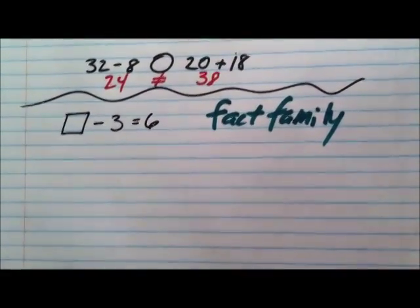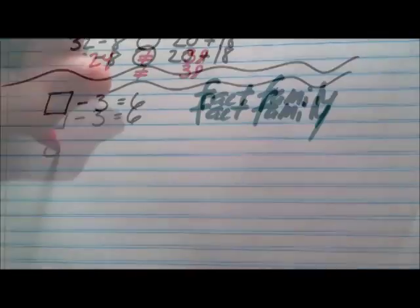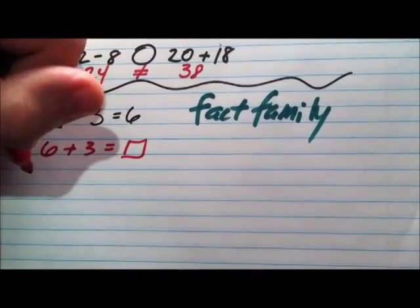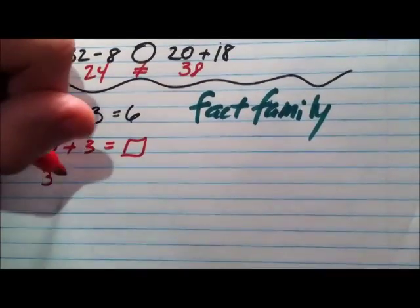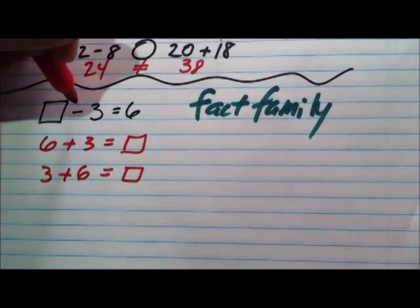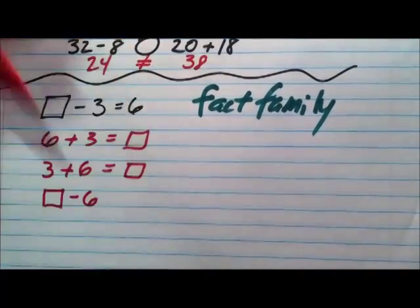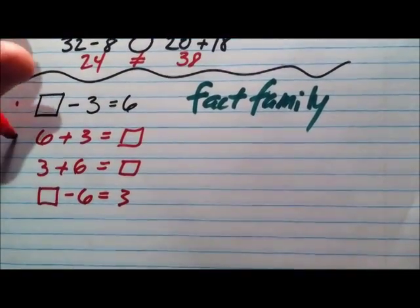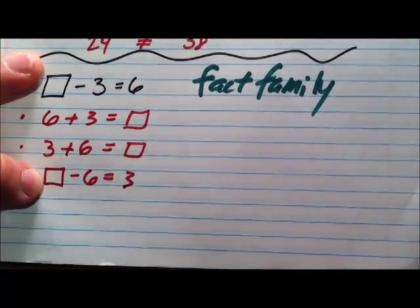And we're going to do that because it's going to create more problems for us. And we're going to choose the one that's going to be easiest for us to solve. 6 plus 3 equals box. And then we'll switch that around because we can use the commutative property. If you remember from the first video, 3 plus 6 equals box. And we've already got box minus 3 equals 6. So we can start with box again, and we can get minus 6 equals 3. So that is 1, 2, 3, 4 members of the fact family. We've got two addition problems and we've got two subtraction problems.